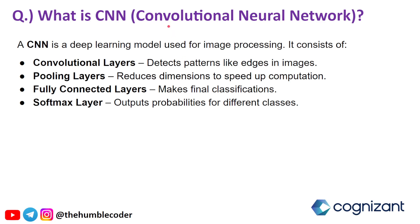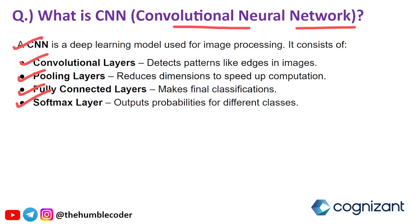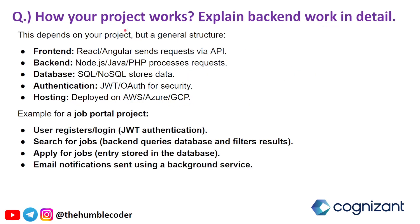The next question is: what is CNN? CNN stands for Convolutional Neural Network. A CNN is a deep learning model used for image processing. It consists of convolutional layers that detect patterns like edges in images, pooling layers that reduce dimensions to speed up computation, fully connected layers that make final classification decisions, and a softmax layer that outputs the probabilities of different classes.